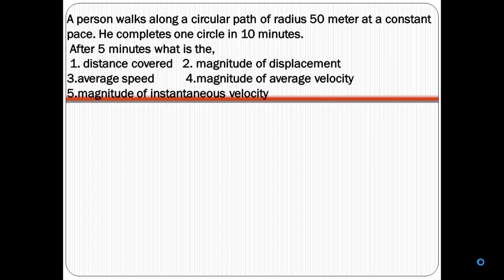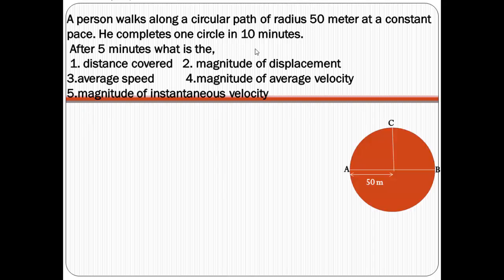Keeping in mind the previously discussed concepts, let us solve an example. A person walks along a circular path of radius 50 meters at constant pace — constant pace here means constant speed. He completes one circle in 10 minutes. After 5 minutes, what is the distance covered, magnitude of displacement, average speed, magnitude of average velocity, and magnitude of instantaneous velocity? Here your T value is 5 minutes. Draw this diagram.